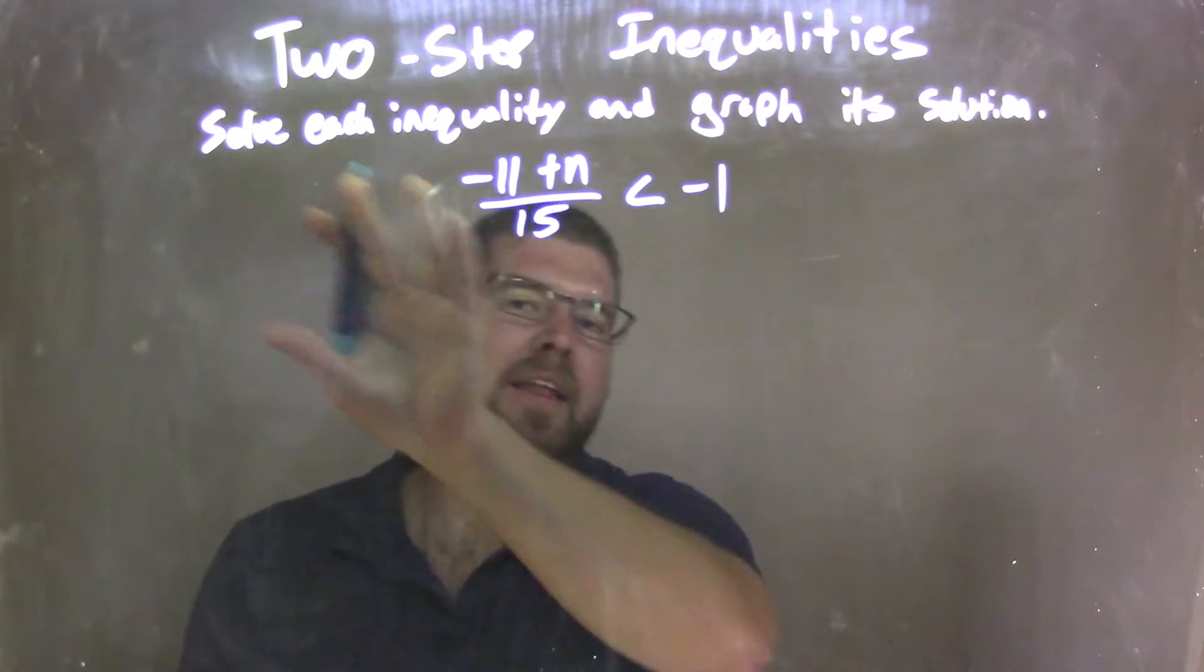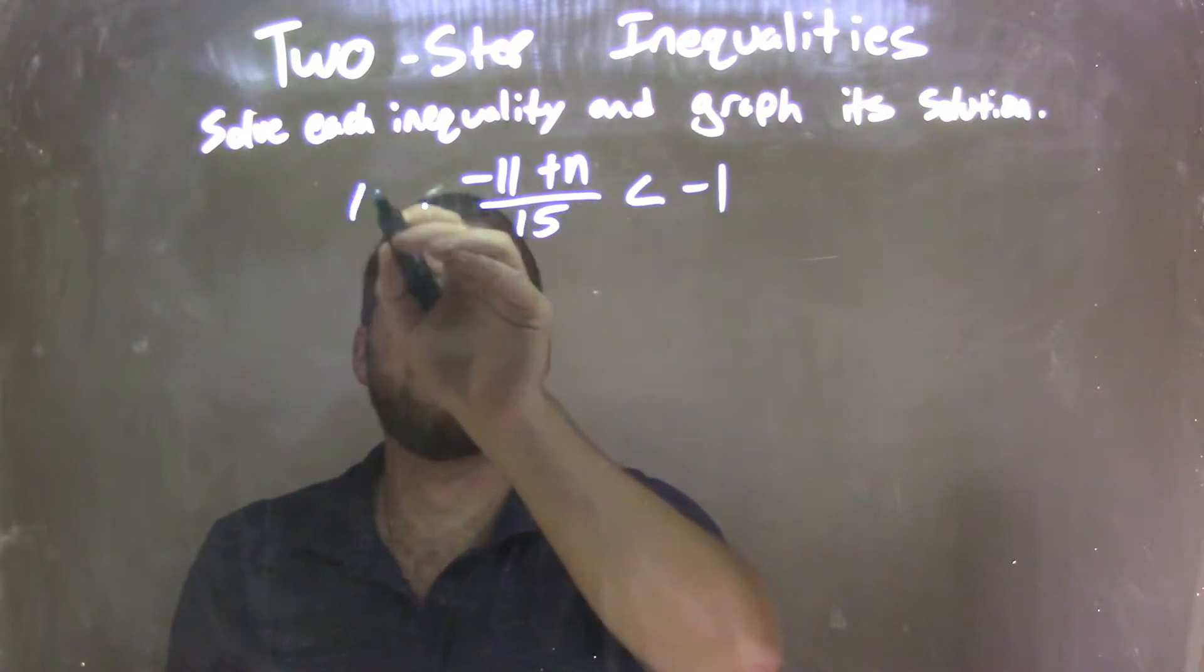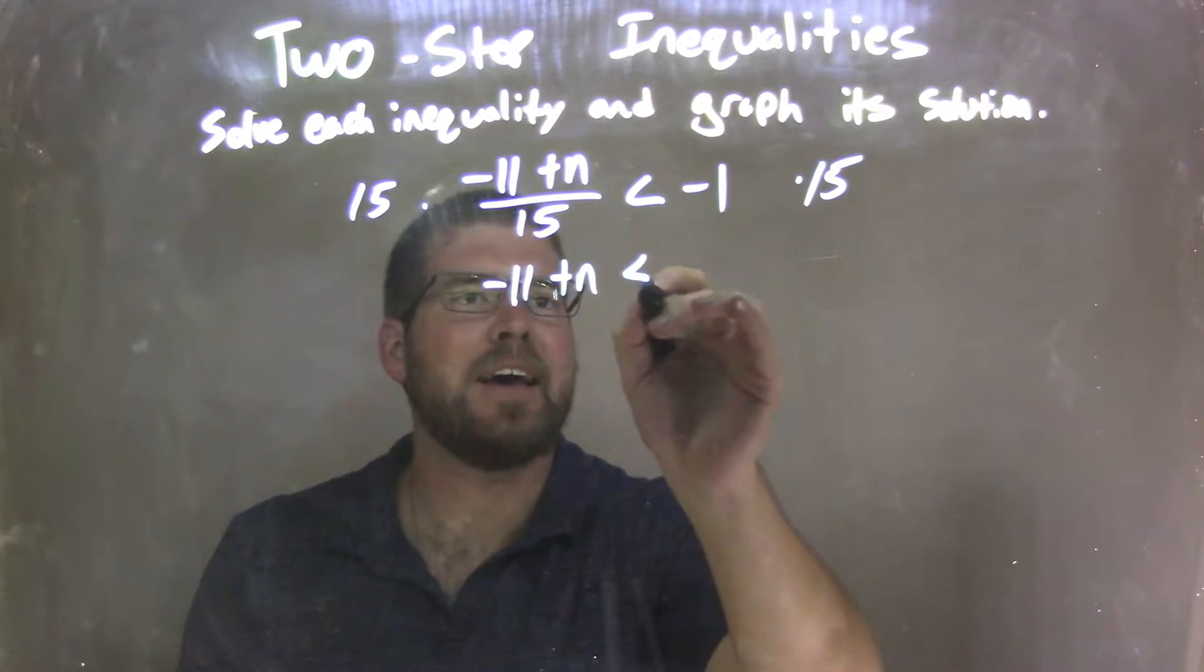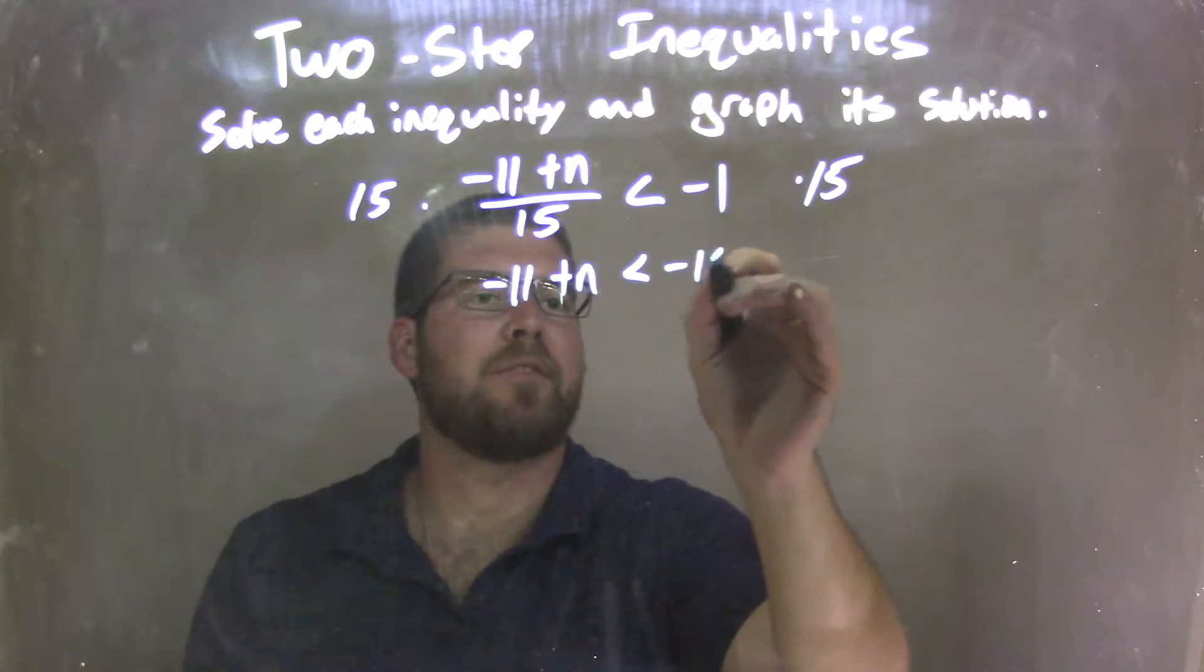My first step is to get rid of the 15, so I multiply both sides by 15. That leaves me with negative 11 plus n on the left, less than negative 1 times 15, which is negative 15 on the right.